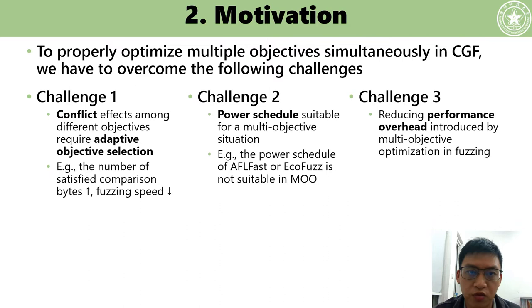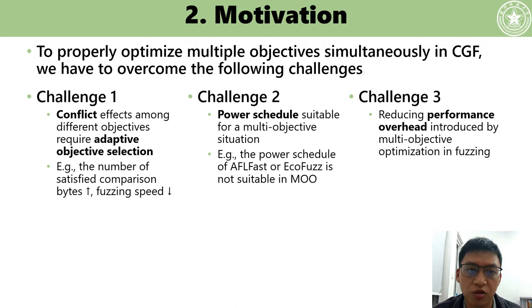To properly optimize multiple objectives simultaneously in CGF, we have to overcome the following challenges. Challenge one is that the conflict effects among different objectives require adaptive objective selection. For example, pushing the number of satisfied comparison bytes to a large value to pass branch conditions will slow down the whole fuzzing process. Challenge two is the power schedule suitable for a multi-objective situation. Challenge three is reducing performance overhead introduced by multi-objective optimization in fuzzing.